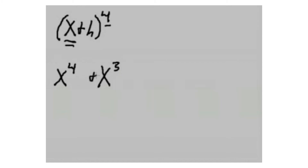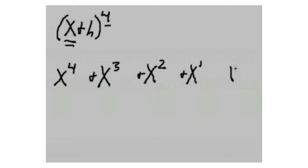[Embedded video] Now I come over and write it again, and take one away: x to the third. I'll put a positive sign there. Then x squared, positive. Then x to the one, positive. Then x to the zero — anything to the zero power is 1. Now we start with the guy on the right, h, beginning at power 4. So h to the fourth, then h to the third, then h to the second, then h to the first, then h to the zero which is 1.